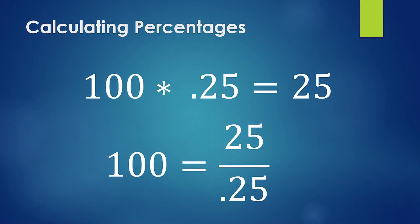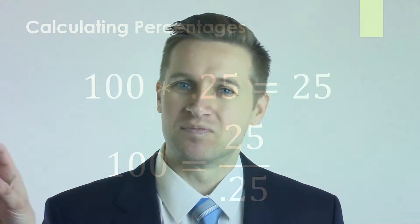What happens is accountants often have to do this equation backwards. You can just flip the equation around and say 25 divided by 25% gives you 100. It's important to realize you can go backwards and forwards in this equation. If you have the portion — the percentage of the whole — you can find the whole value by dividing by the percentage.